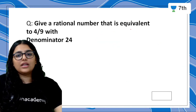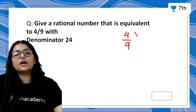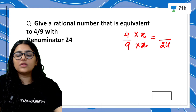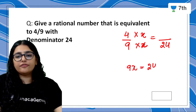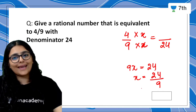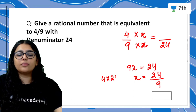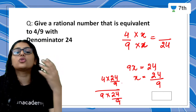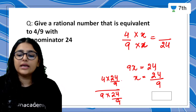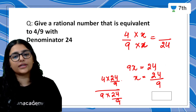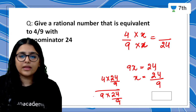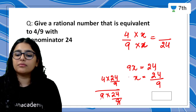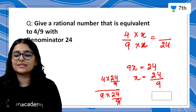Let's see one more question: find a rational number equivalent to 4 by 9 with denominator equal to 24. So I have to find the numerator. In this case, 9x equals 24, so x equals 24 upon 9. Then numerator is 4 into 24 upon 9, and denominator is 9 into 24 upon 9 — the 9s cancel, giving 24 in the denominator. The numerator is 4 into 24 equals 96, so the answer is 96 upon 24, approximately 10.67. Don't worry — you can multiply numerator and denominator by the same number.